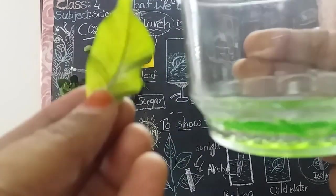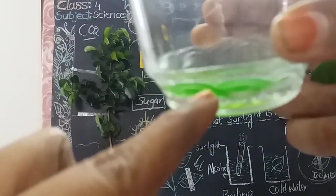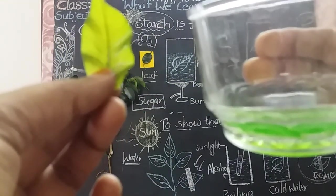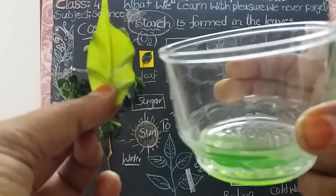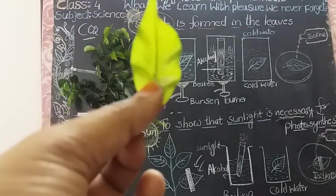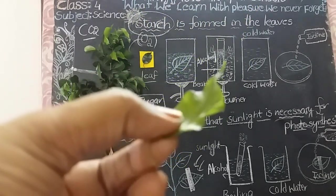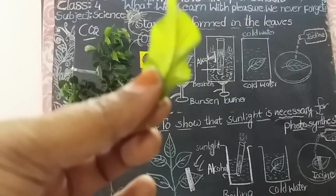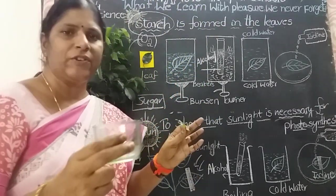This is a pale leaf — the leaf turns pale green. Don't confuse children: chlorophyll dissolves in the alcohol solution and the leaf turns pale color. I put the iodine solution and the leaf turns bluish black, so starch is present in the leaf. This experiment proved that starch is formed in the leaves.